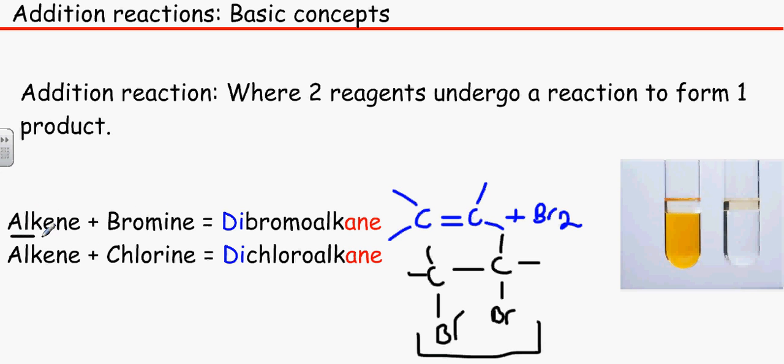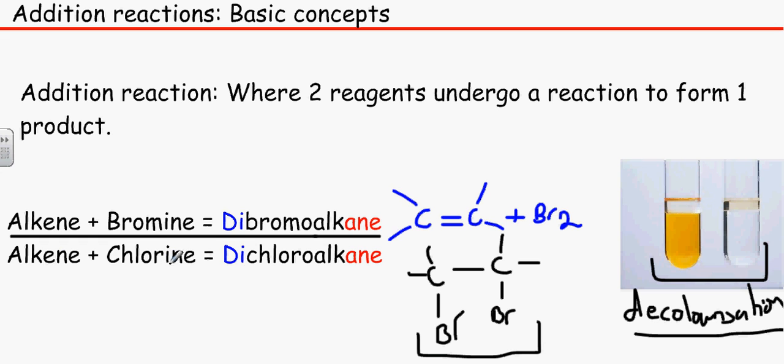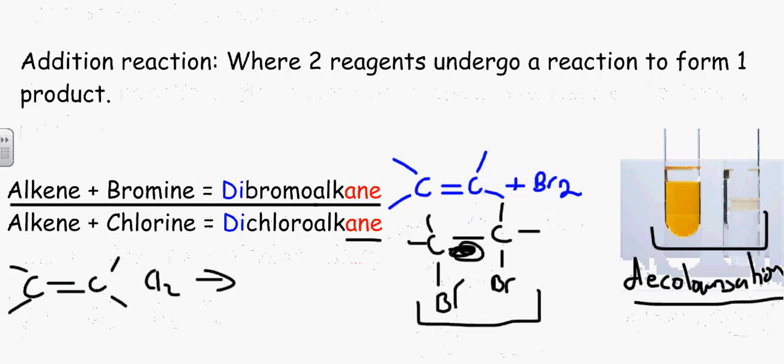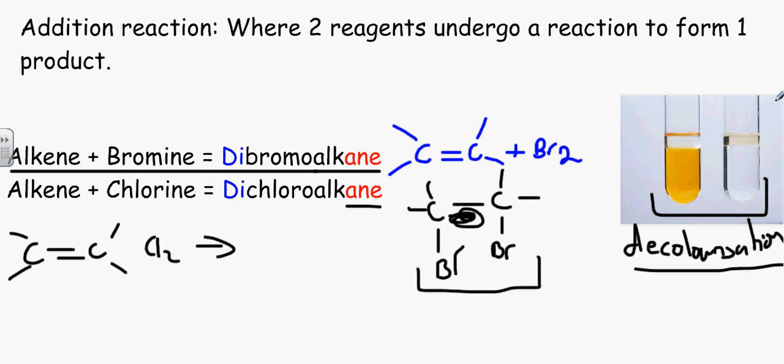This test is very useful for detecting alkenes because in the laboratory the one thing we will see is decolorization. Don't say that the thing will go clear because we don't know what the thing is, and go clear is a GCSE term, so decolorization is the proper word to say. Same thing with chlorine - we would react ethene with chlorine to make 1,2-dichloroethane. Remember single bond and alkane. This happens at room temperature and it's also called halogenation because these are halogens.